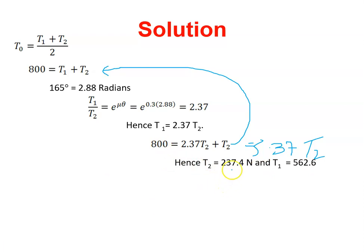Now I have values for T₁ and T₂. I have the power equation with T₁ and T₂. Now I need to get V. V equals ω times r.